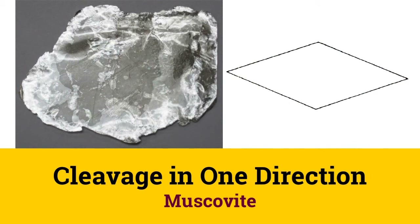Mica minerals like muscovite and biotite split easily into paper-thin sheets along one direction, like pages of a book. So mica minerals have one prominent cleavage direction and are thus said to have cleavage in one direction.